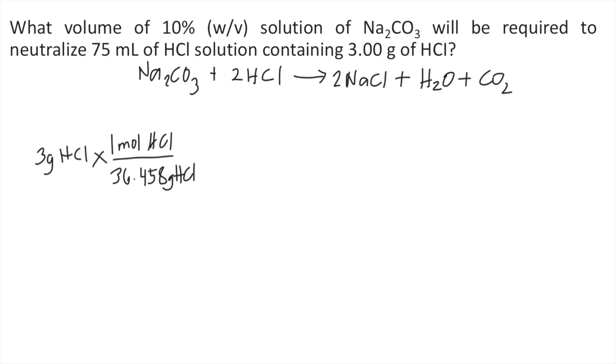Hydrogen is 1.008 and Cl is 35.45. So the molar mass of HCl is 36.458 grams of HCl equivalent to 1 mol of HCl. So as you can see, the grams of HCl will cancel out and that will give you the moles of HCl.